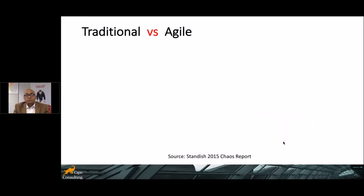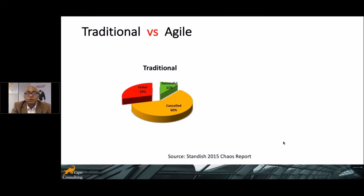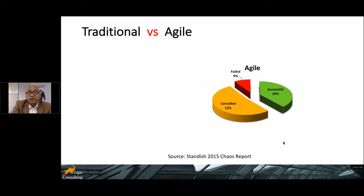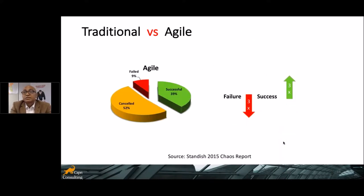Comparing traditional project management against agile, using a 2015 Standish Group report: traditional projects show 60% cancelled, nearly 30% failed, and only 11% successful. In the case of agile, cancelled are around 52%, the success rate goes up to 39%, and failed are only 9%. So failures are three times less and success is three times higher. That is the reason why we should go for agile — it allows you to change direction and respond to changes as the product evolves.